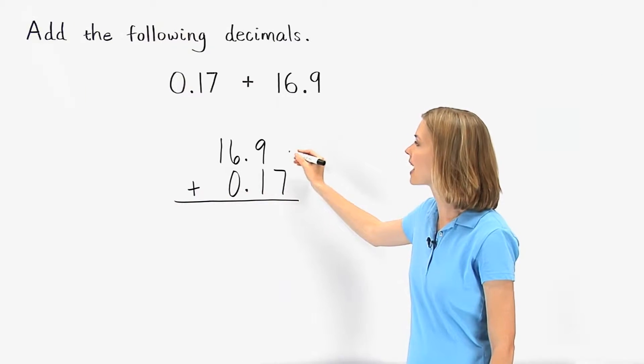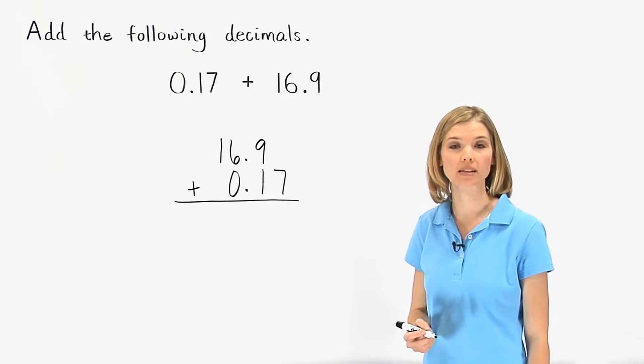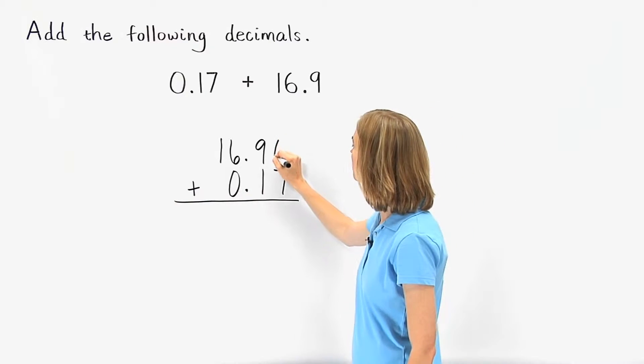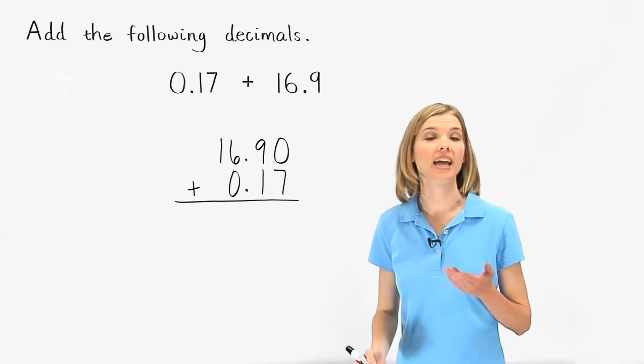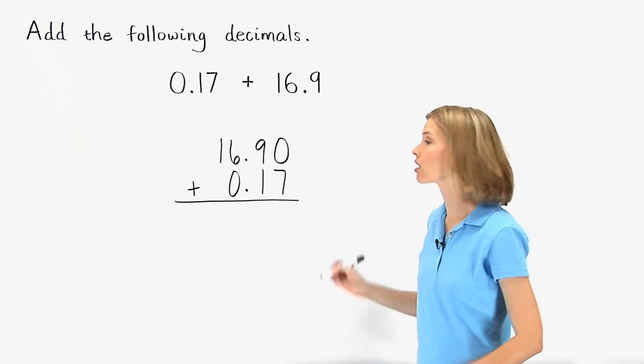Notice that 16.9 has no digit in the hundredths place, so we can use a zero to fill this position. Now we simply add the numbers by column, starting on the right.